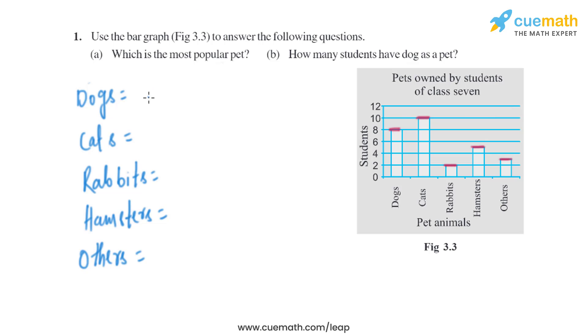So let's write it. As we can see, there are 8 students who have dogs, 10 students who have cats, 2 students for rabbits, 5 students for hamsters, and 3 students for others. Which is the most popular pet? Cat is the most popular pet as 10 students have cat, which is the most.